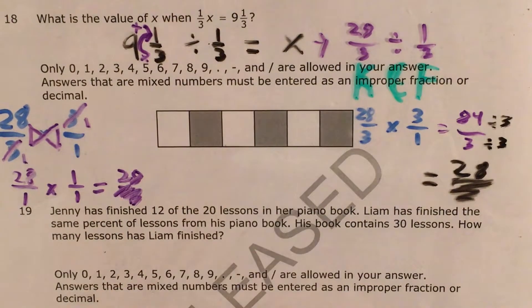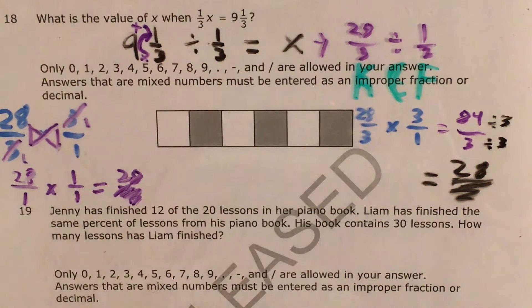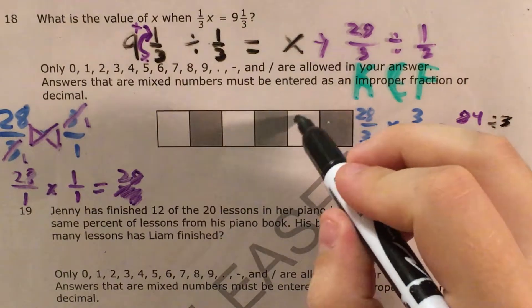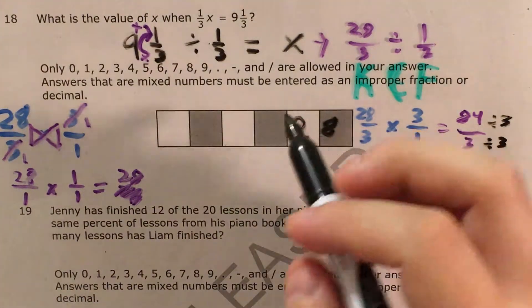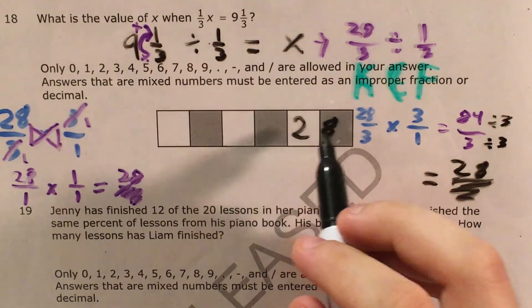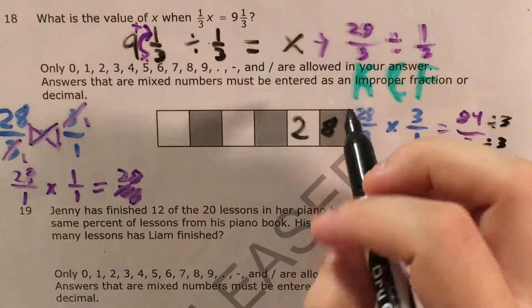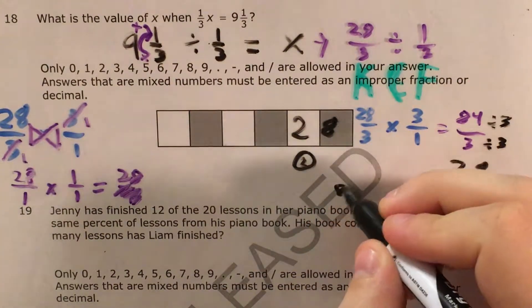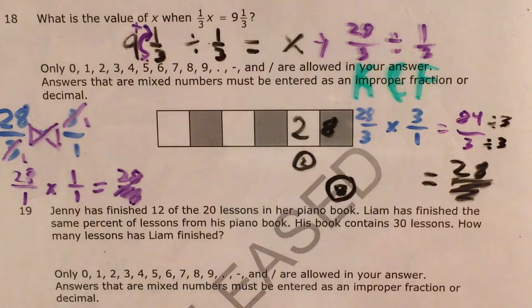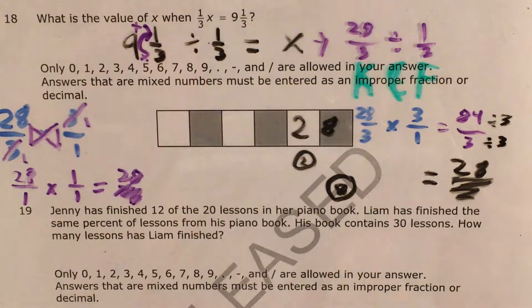So now the last step is to just make sure we know how to write this and answer it in the gridded response section. I write 2 in one box and 8 in the other box. So I give every digit its own box. I look for the 2 bubble and the 8 bubble. And I bubble those in under each corresponding number. And that's it. We are done with question 18.